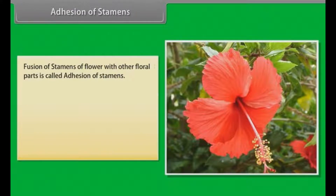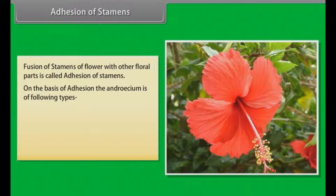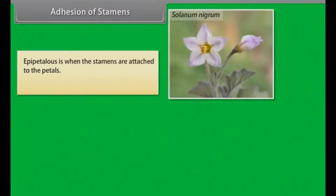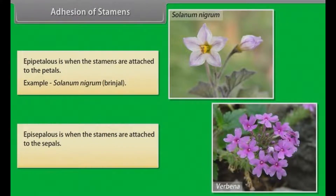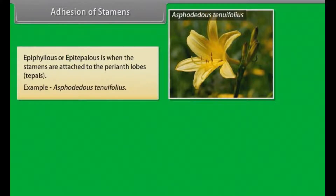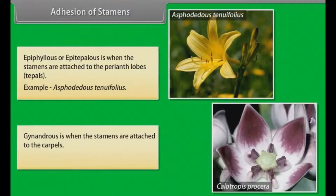Adhesion of stamens. Fusion of stamens of a flower with other floral parts is called adhesion of stamens. On the basis of adhesion, the androecium is of following types: Epipetalous — when the stamens are attached to the petals; example, Solanum nigrum (Brinjal). Episepalous — when the stamens are attached to the sepals; example, Verbena. Epiphyllous — when the stamens are attached to the perianth lobes (tepals); example, Asphodelus tenuifolius. Gynandrous — when the stamens are attached to the carpels; example, Calotropis procera.